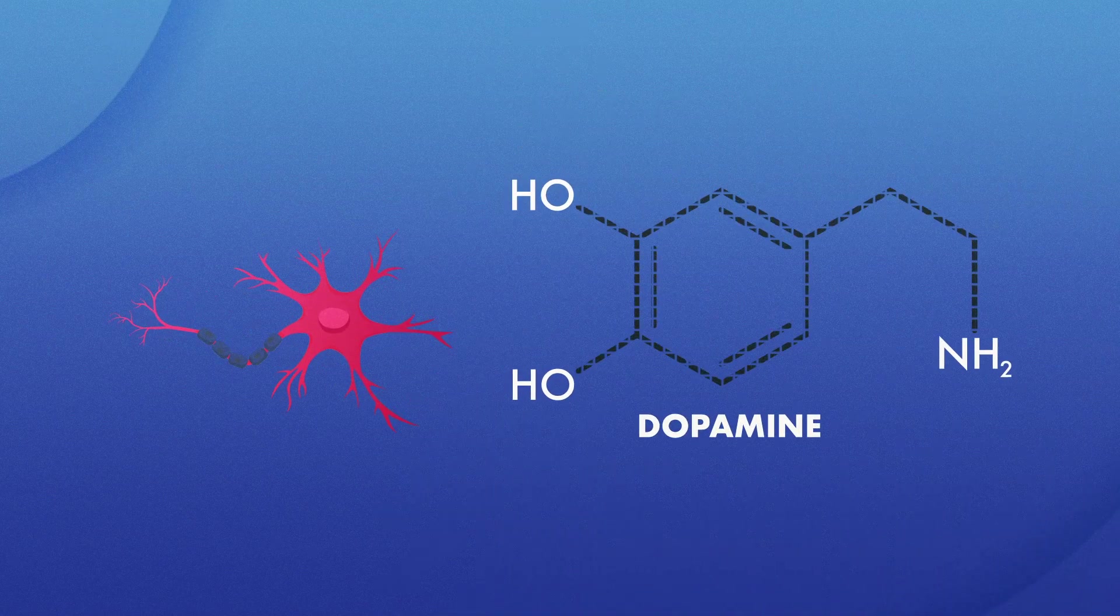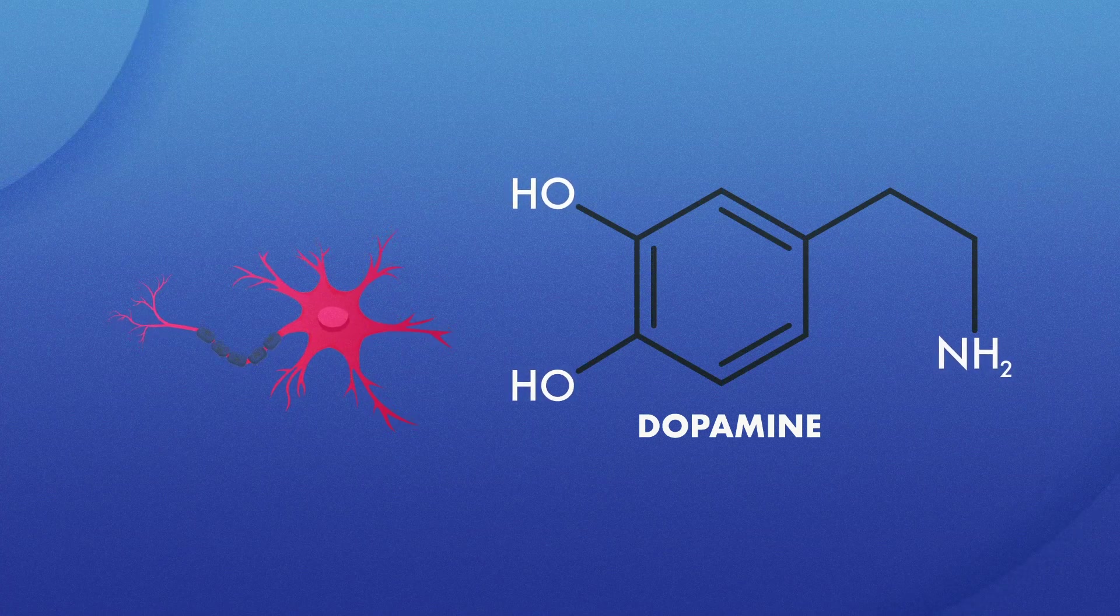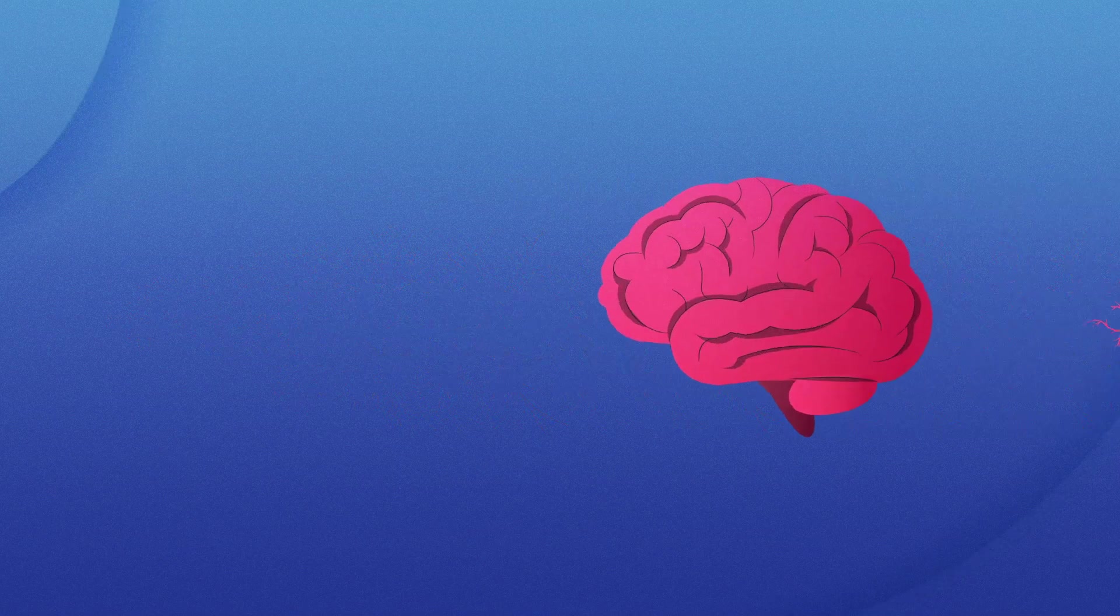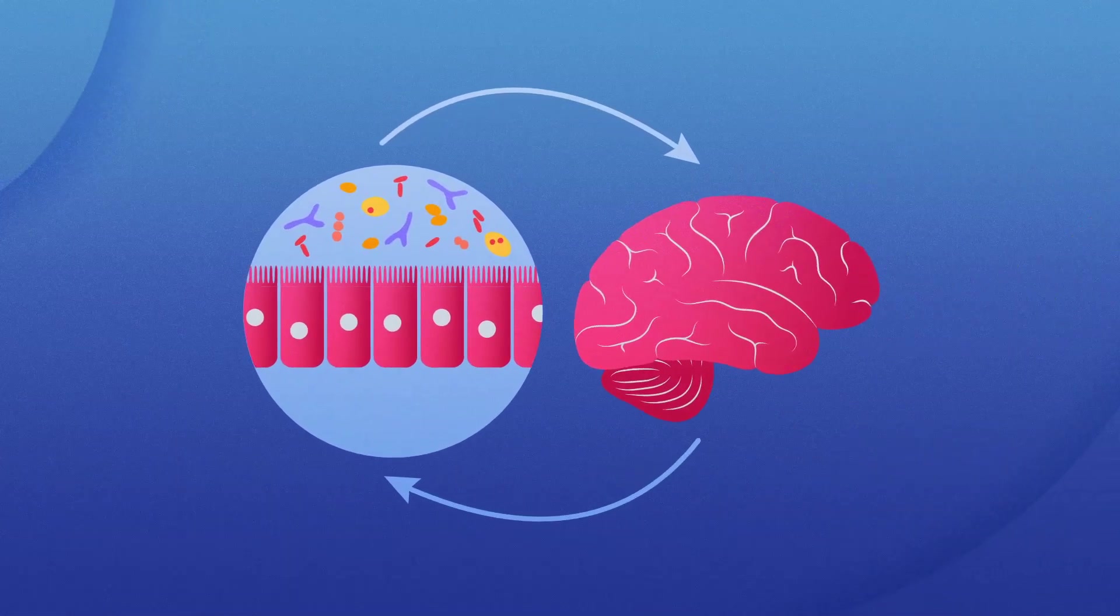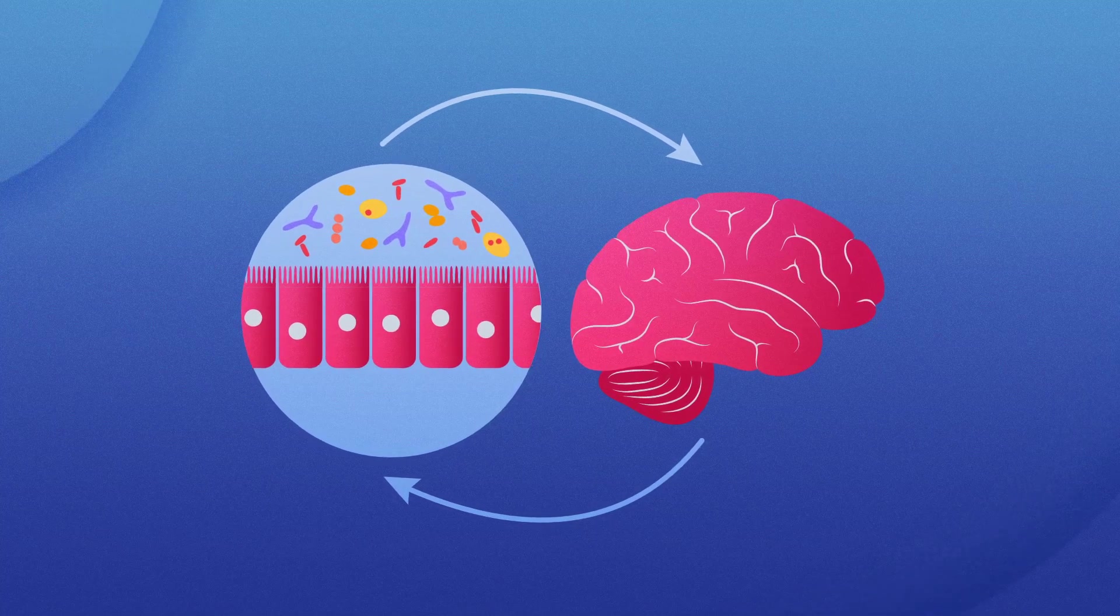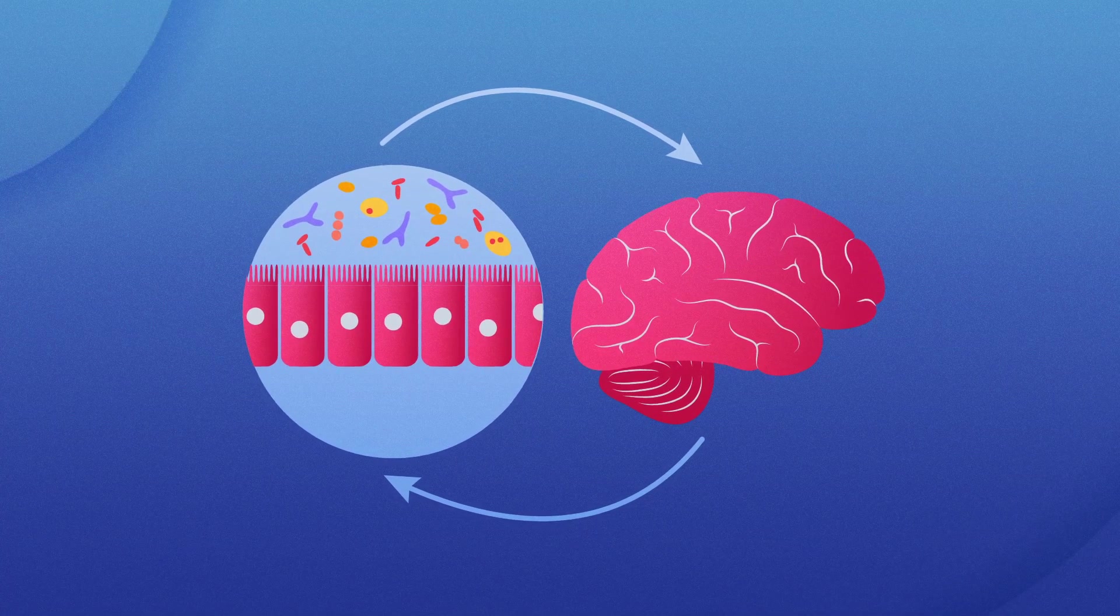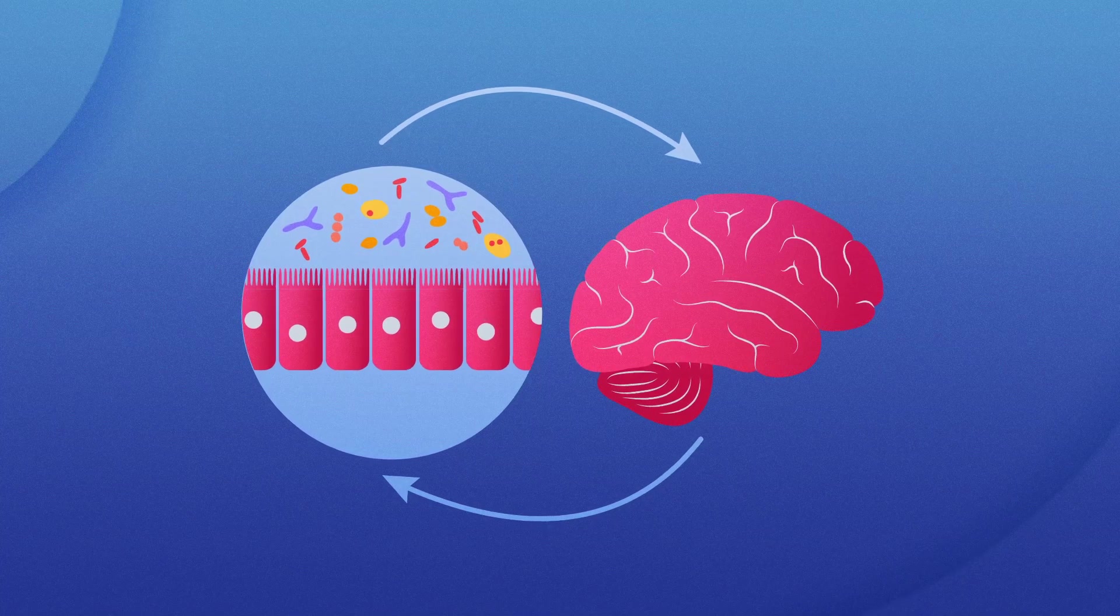Moreover, our gut microbiome can influence the production of other neurotransmitters like GABA and dopamine, impacting anxiety, stress, and reward systems in the brain. The complex interactions of these microbially-produced neurotransmitters add depth to the microbiome-gut-brain axis.